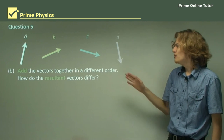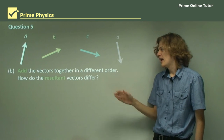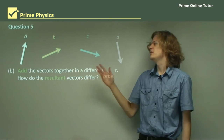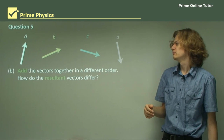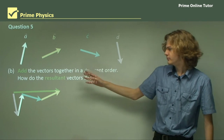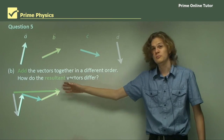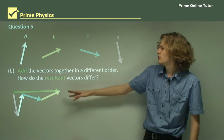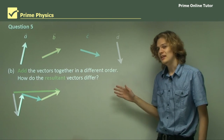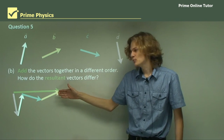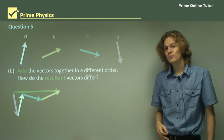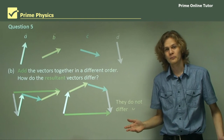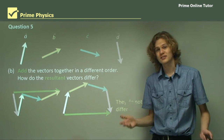Part B: Add the vectors together in a different order. How do the resultant vectors differ? The order doesn't really matter, so we'll use D, A, C, B. We add D to A, that to C, and that to B. Our resultant vector is drawn from the tail of the first vector to the head of the last vector. We can see it looks just the same as before — it goes from left to right. Comparing to our original, the two resultant vectors are exactly the same; they do not differ at all. So it doesn't matter which order we add vectors together in — we'll always get the same answer.